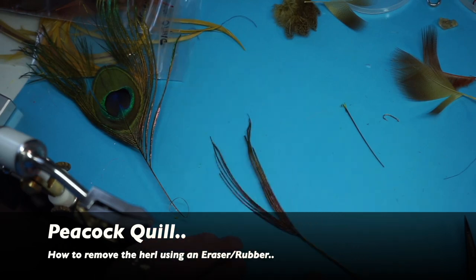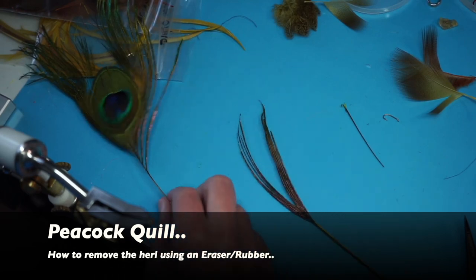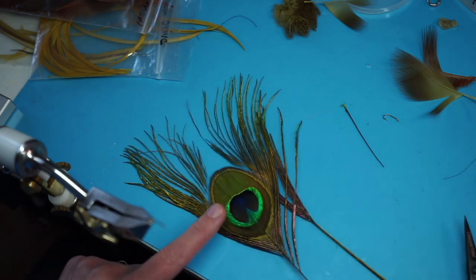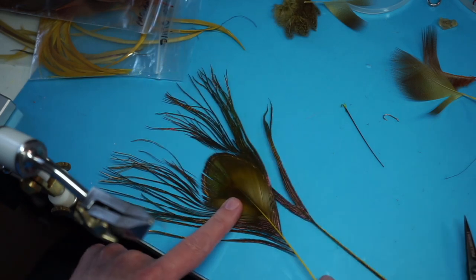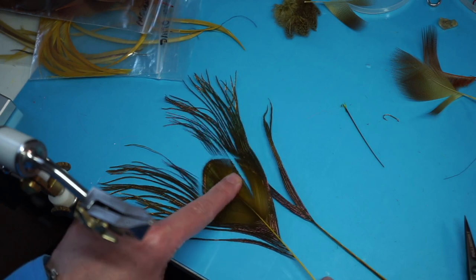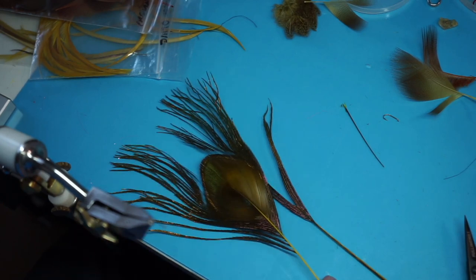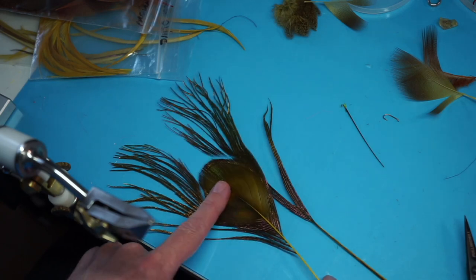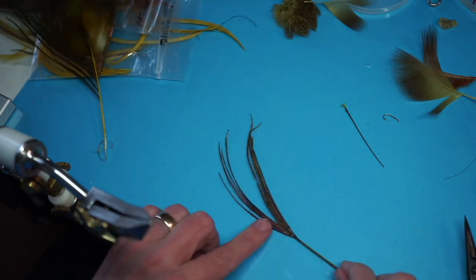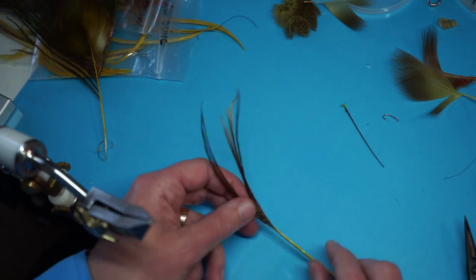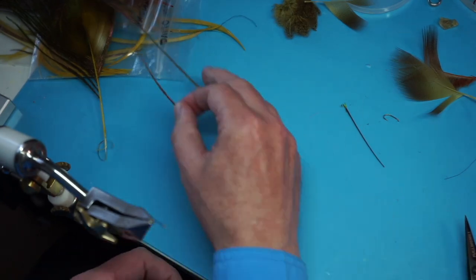Now, the herl I'm going to be stripping is actually the herl, not the eye feather, but most times you would be using that for the quills. These are the best fibers or the best quills to use for a body if you want a nice, lighter or better color, but I want the dark color, so I'm using the fibers from further down the feather.